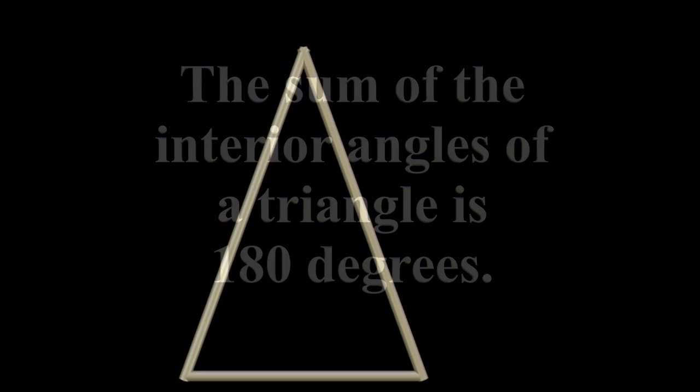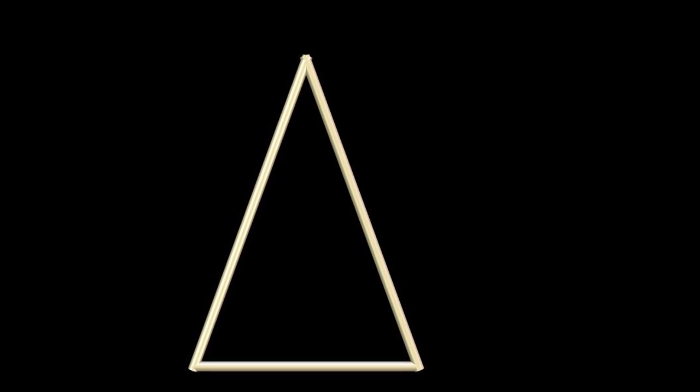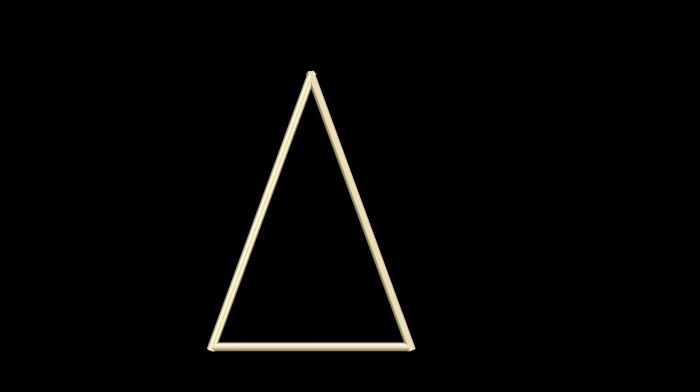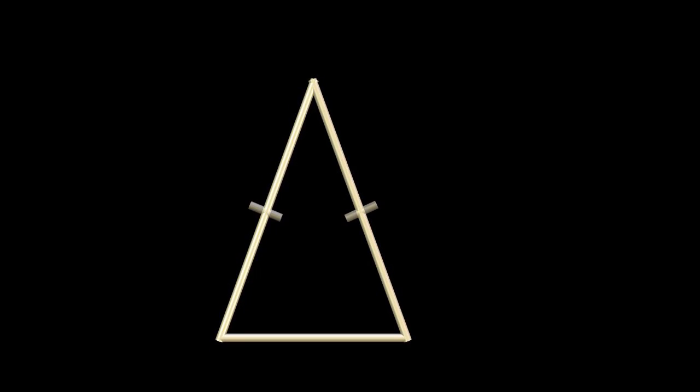And truth two is that the base angles of an isosceles triangle are always equal. An isosceles triangle has two sides equal. These two sides. It turns out the angles at the base are also equal.